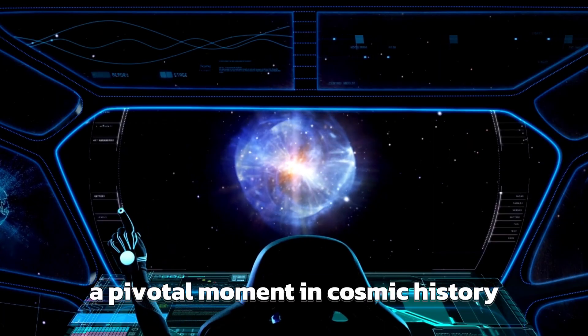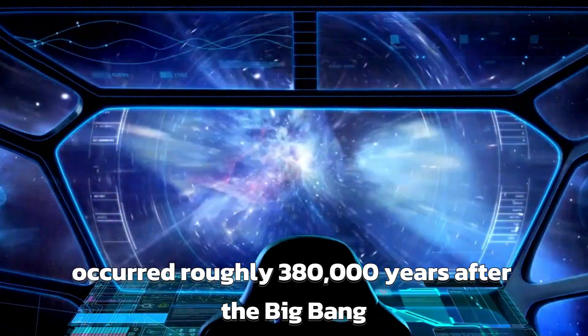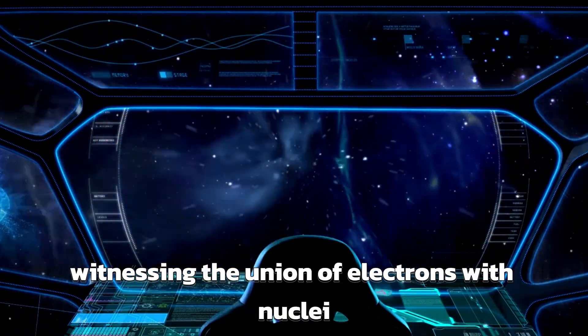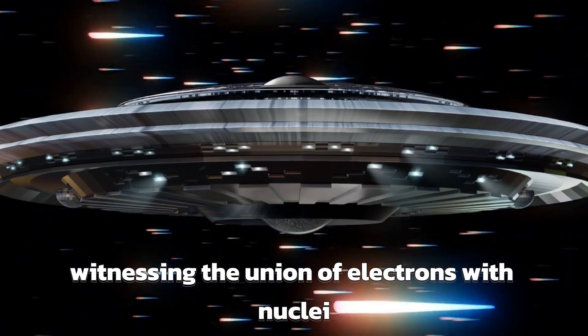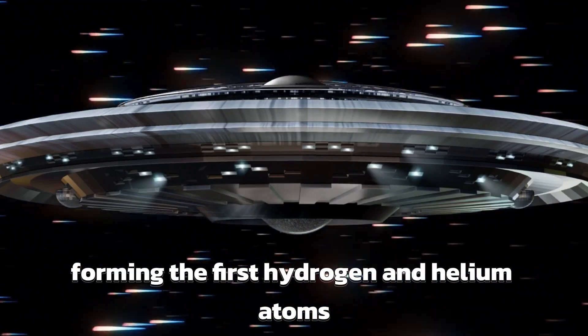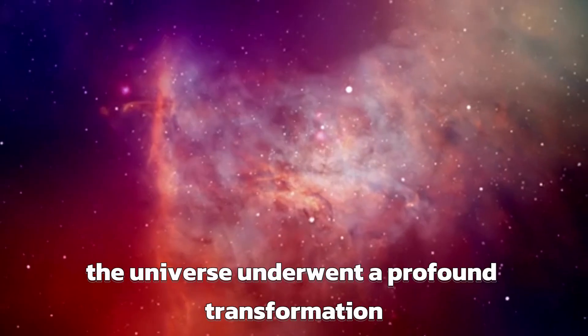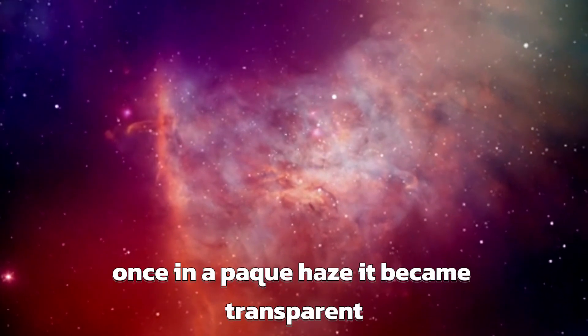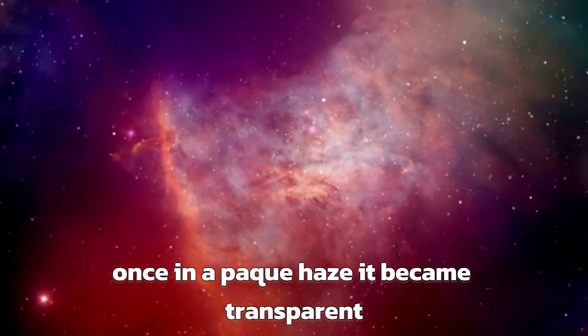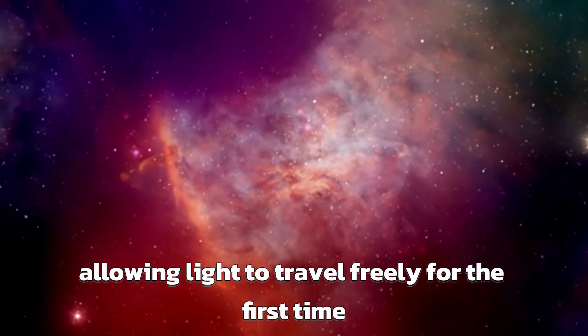A pivotal moment in cosmic history occurred roughly 380,000 years after the Big Bang, witnessing the union of electrons with nuclei, forming the first hydrogen and helium atoms. Suddenly, the universe underwent a profound transformation. Once an opaque haze, it became transparent, allowing light to travel freely for the first time.